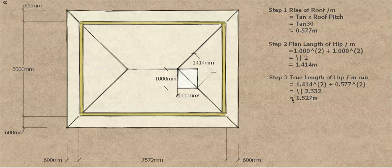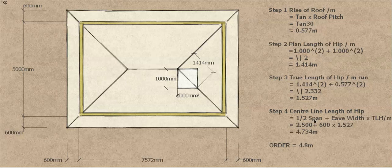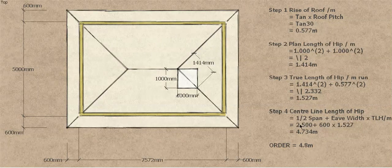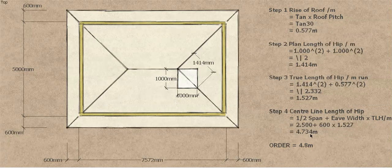Now all we do is grab the half span and multiply it by the true length of the hip. We can also add our eave width in here because we're looking for the overall length of the hip right out to the corner. So: (half span + eave width) × true length per meter = overall hip length. That's (2.5m + 0.6m) × 1.527, which gives us 4.734 meters.